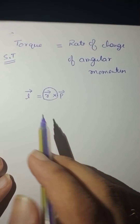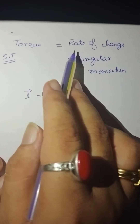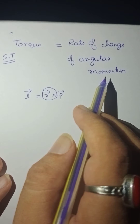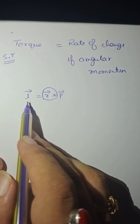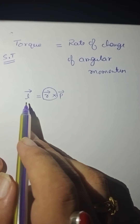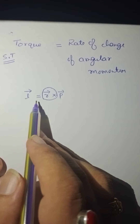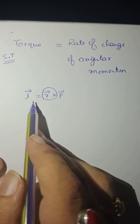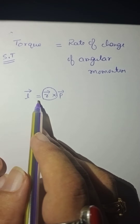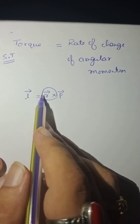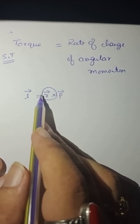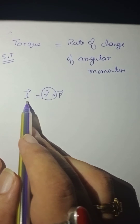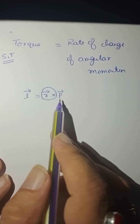We need to prove that torque is equal to rate of change of angular momentum. First, we will see what is angular momentum. Angular momentum is equal to R cross P, or angular momentum is moment of linear momentum. L is equal to R cross P.